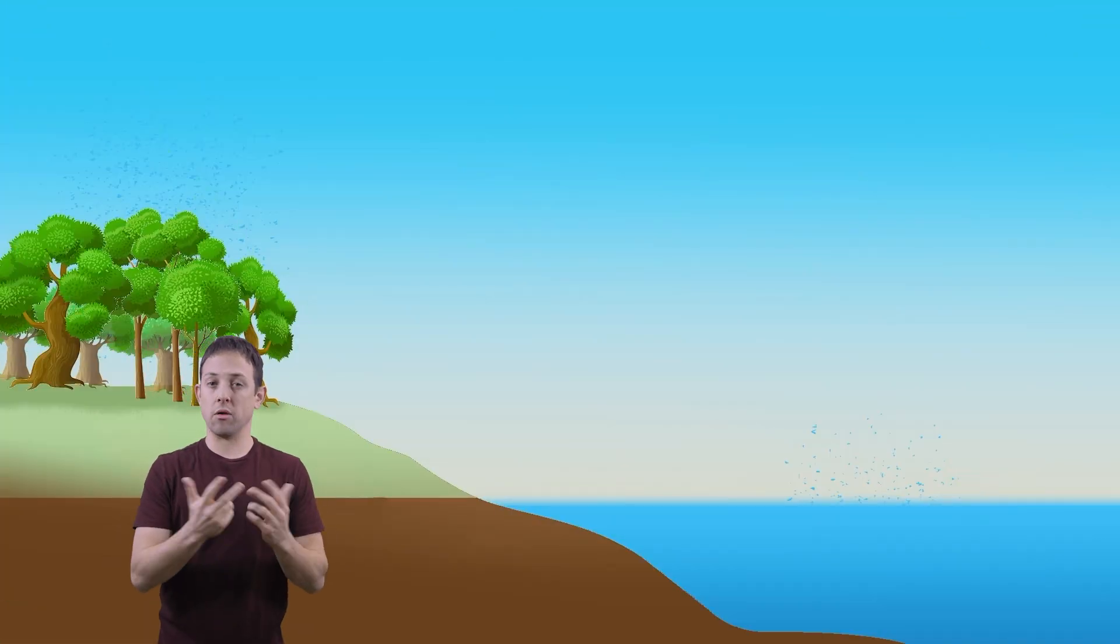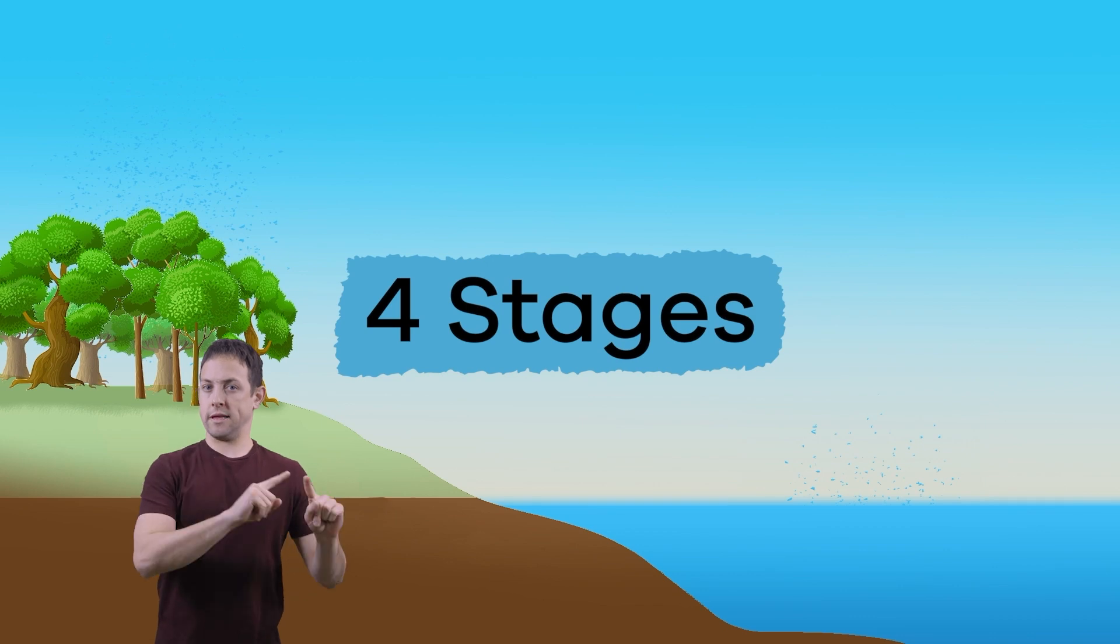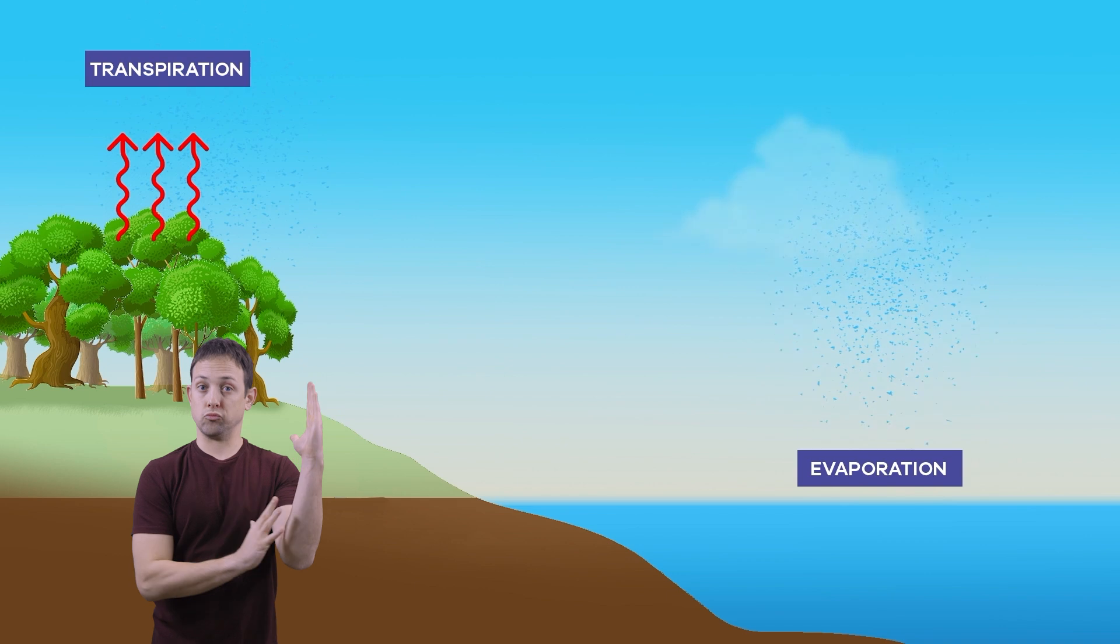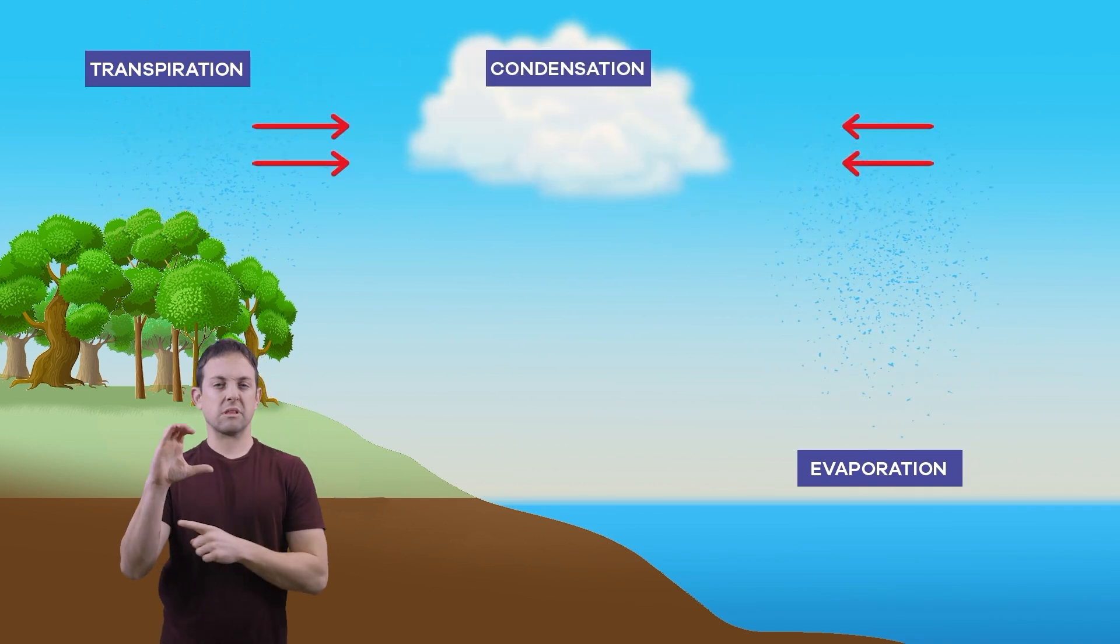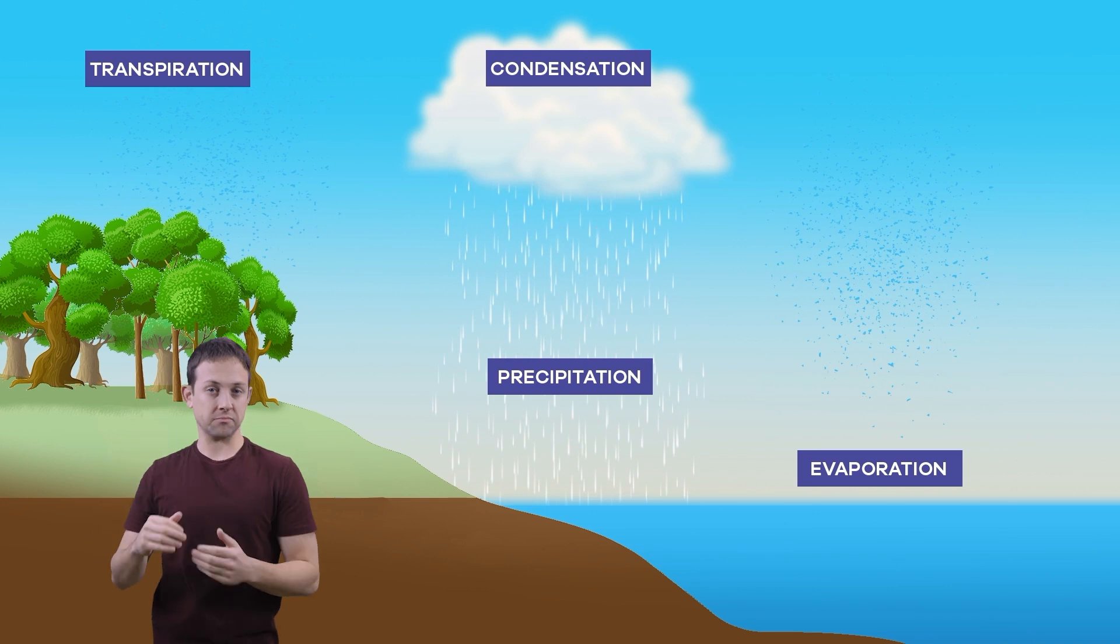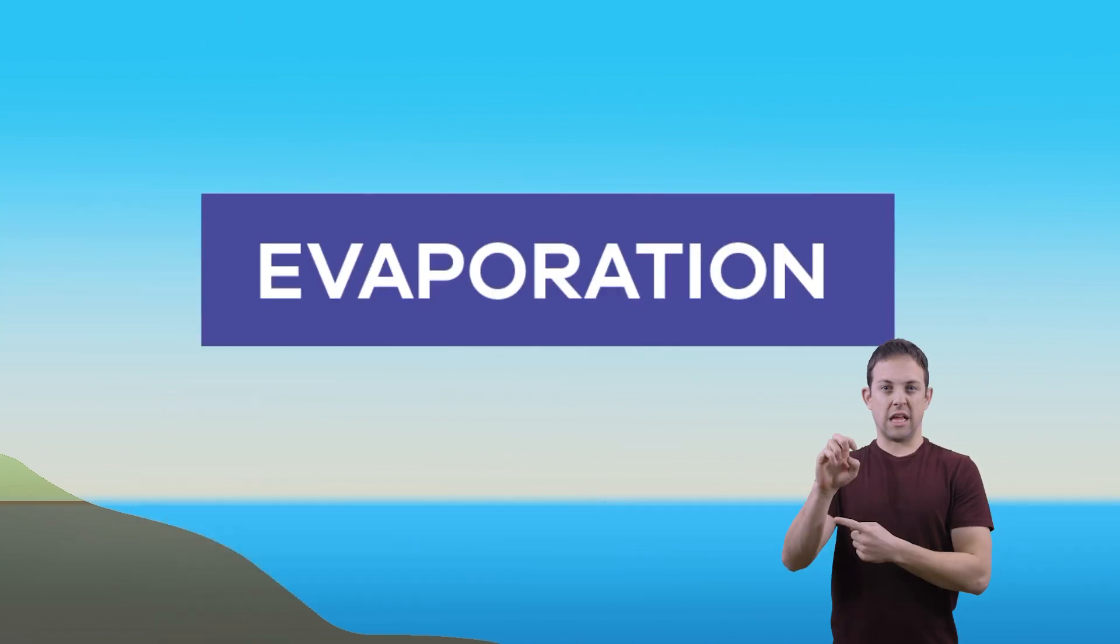How does this process happen? It happens through four different stages called evaporation, transpiration, condensation, and precipitation. Let's talk about each in more detail, shall we? First up, evaporation.